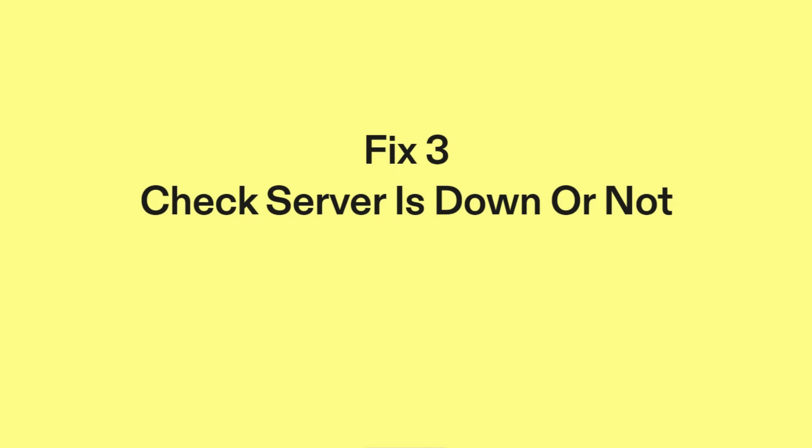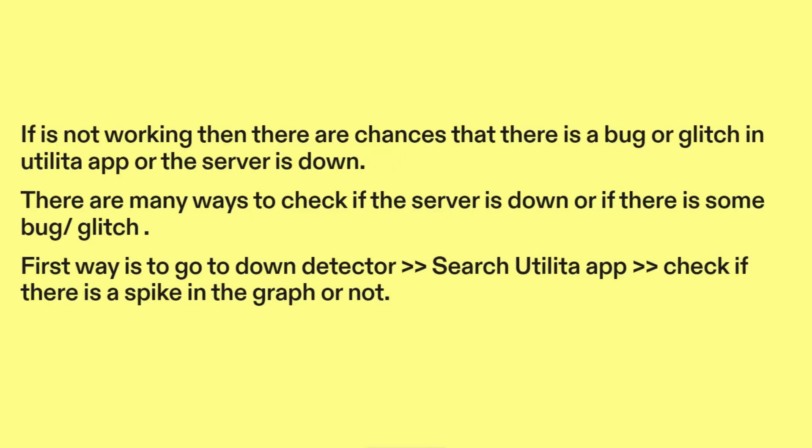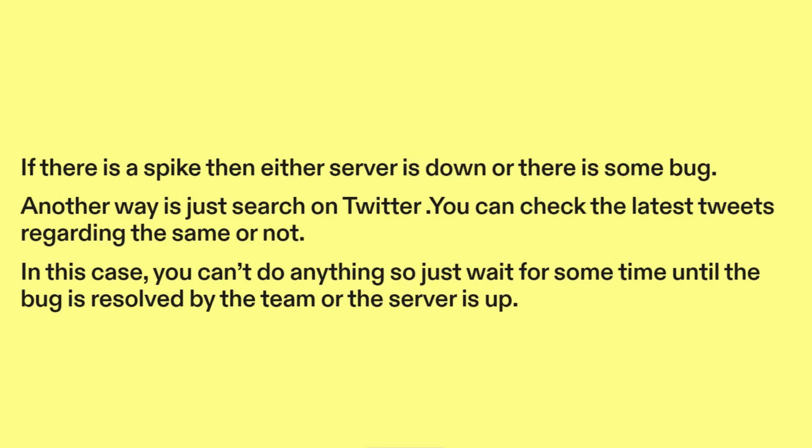Fix three: check if the server is down or not. If it's not working, there are chances that there is a bug or glitch in the Utilita app or the server is down. There are many ways to check this. First, go to Down Detector, search Utilita app, and check if there is a spike in the graph. If there is a spike, then either the server is down or there is some bug.